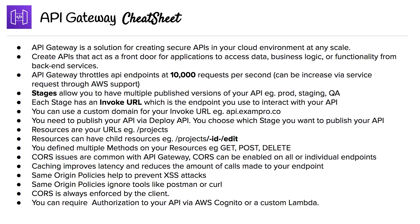CORS is also enforced by the client — the client being the browser. The browser will look for CORS headers and interpret them. You can require authorization for your API via AWS Cognito or a custom Lambda. So just to be clear, you can protect the calls made to API Gateway.